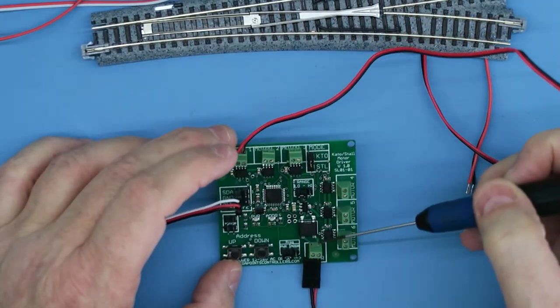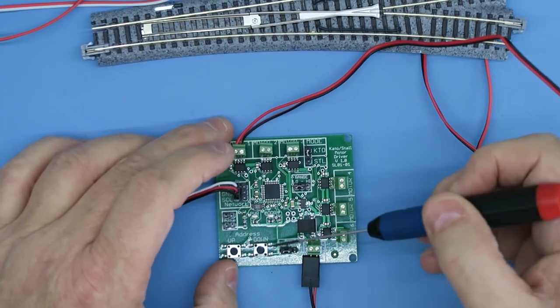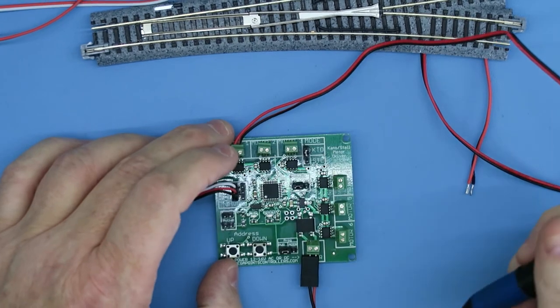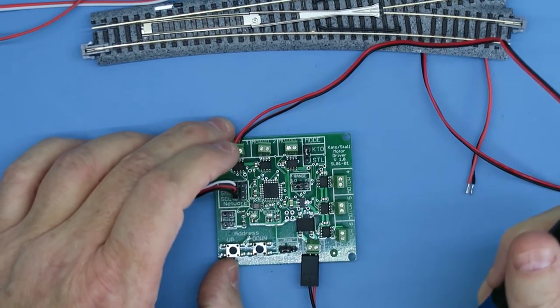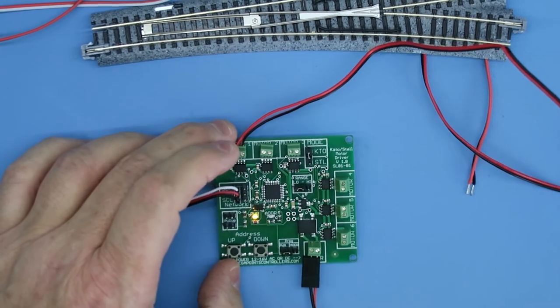We can set the address range here, low or high, and we can teach it which address we want on our network. So we could, in theory, have 192 stall motors or Kato points attached to our network.